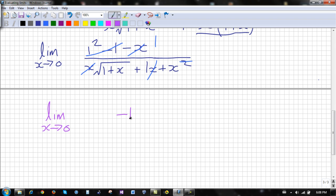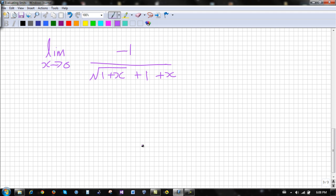So let's rewrite the final product. So we have negative 1, all divided by root 1 plus x, plus 1 plus x. After that, we can evaluate the limit.